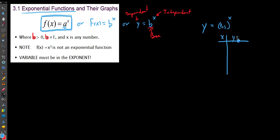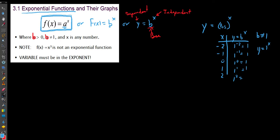We don't allow the base to be 1 because if we have y = 1^x, it wouldn't matter what you plugged in. Whether it's 1^(-2), 1^(-1), 1^0, 1^1, or 1^2, we always get 1 as an answer. So this would not be considered an exponential function — it would really be a constant function.